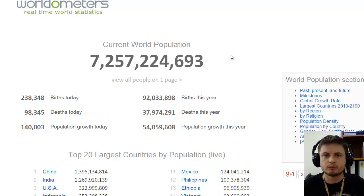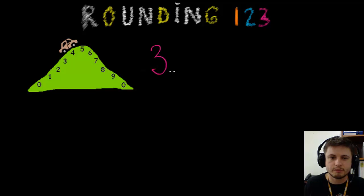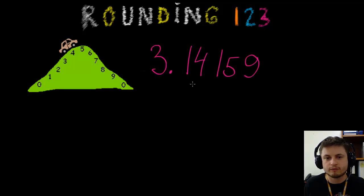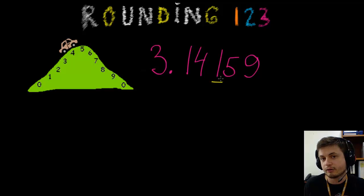Basically, the way rounding works is as follows. Let's pick a number as an example — I'm going to pick pi because I like pi. And this is what we're going to use: 3.14159. Obviously there's more, but we're not going to concern ourselves with that. We're going to round it to the 1,000ths place, which is basically four significant digits.